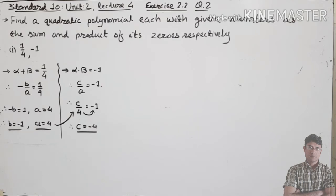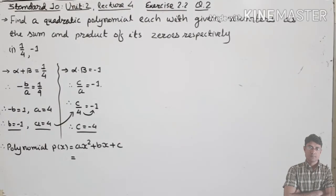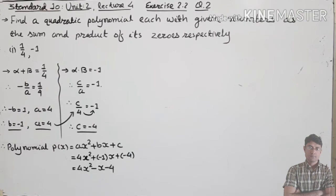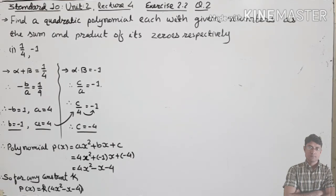So a equals 4, b equals minus 1, c equals minus 4. The zeros have sum 1/4 and product minus 1. Therefore, for any constant k, p(x) equals k in bracket (4x squared minus x minus 4). This completes the answer for the first part.